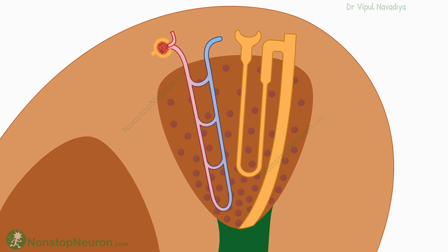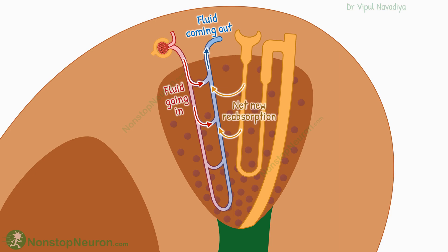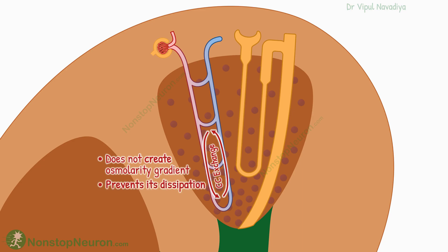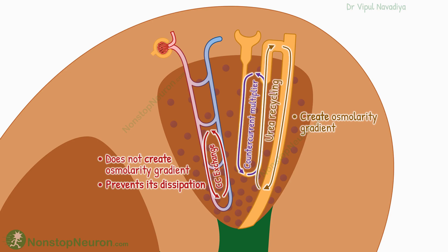There are a few more points worth noting. First, the fluid coming out of ascending vasa recta has slightly more solutes and water than that which entered. At steady state, these solutes and water represent the net new reabsorption from the renal tubule. The solutes trapped to keep the medulla hyperosmolar are not taken away. Second, the vasa recta does not create the osmolarity gradient — it just prevents its dissipation. The responsibility of creating this gradient is still on the countercurrent multiplier mechanism and urea recycling, and both these things are done by the nephron.